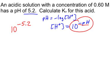So we will type that in, 10 to the negative 5.2, and I get 6.31 times 10 to the negative 6. That is the concentration of H+.